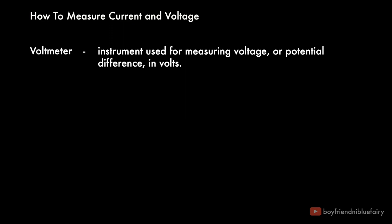A voltmeter, on the other hand, is an instrument used for measuring voltage or potential difference in volts. In circuit diagrams, a voltmeter is represented by a letter V enclosed by a circle.